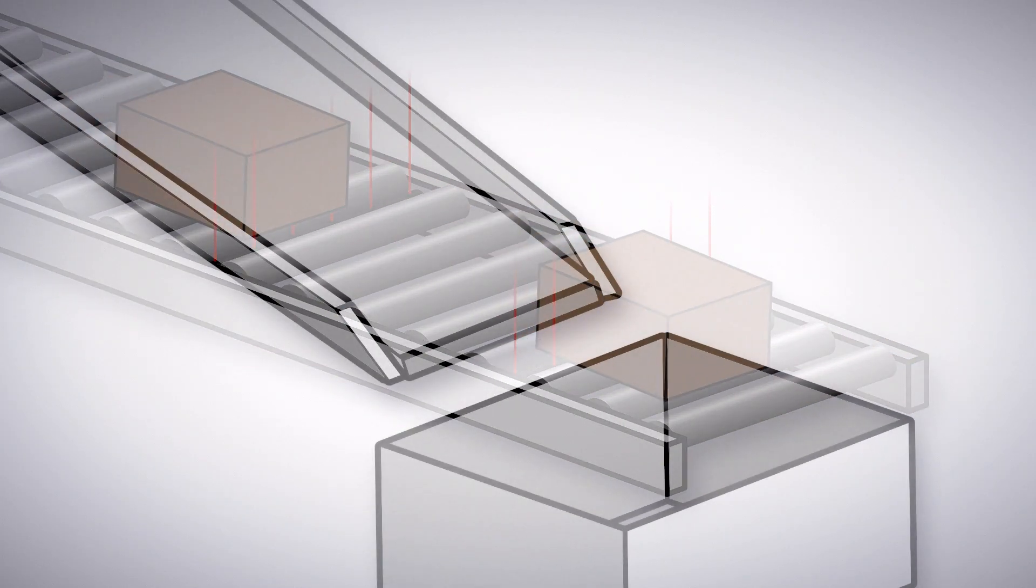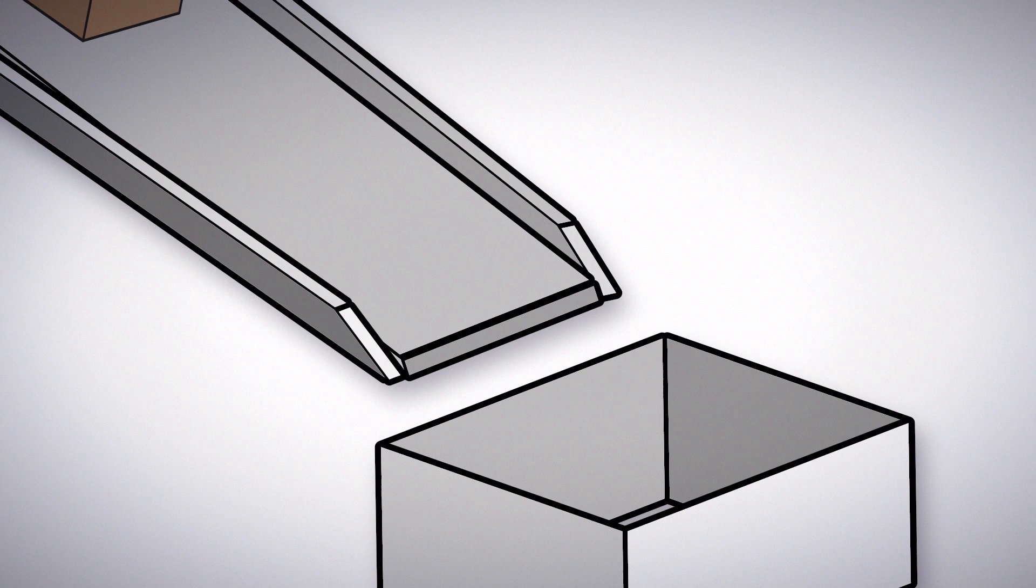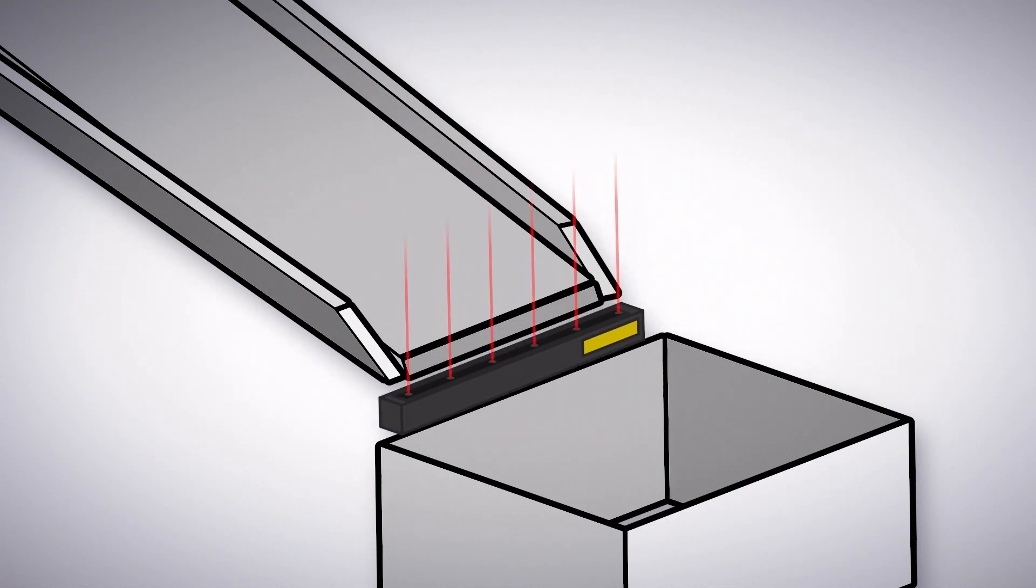But in the toughest environments where only the most durable sensor will work, such as chutes, the SAB sensor array bar provides leading edge detection in a heavy duty housing.